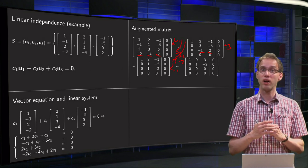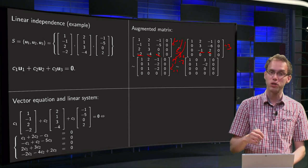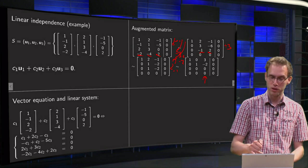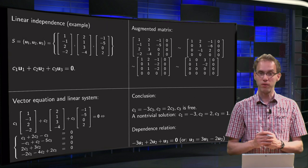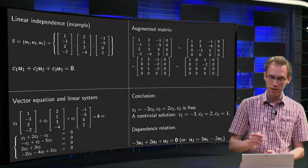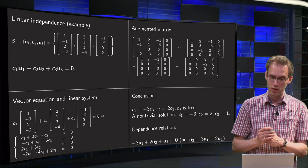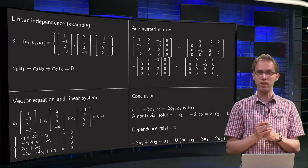So, done with our row reduction. What's the solution of our system? Now we see that we have a free variable, for example the last one, so we can set the last one free, and then we find c1 equals minus 3 times c3 and c2 equals 2 times c3.